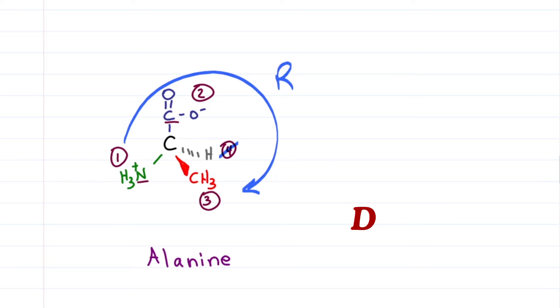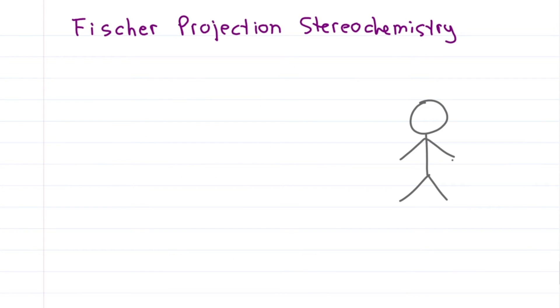Would this R alanine give us D or L? Let's find out. Mr. Organic Chemistry is here to help us review Fischer projections. The horizontal line comes out of the page like Mr. Organic Chemistry's bow tie and vertical like Mr. Organic Chemistry's spine is dashed and into the page.